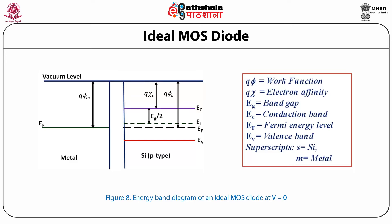This figure shows the energy band diagram of an ideal MOS diode under zero applied bias. Where q*Phi is the work function, q*Chi represents the electron affinity, Eg is the energy band gap, Ec and Ef are the conduction and the Fermi energy bands, and Ev is the valence band. Here the superscript S corresponds to silicon and M corresponds to the metal. When biasing is applied across an ideal MOS diode, there may be three cases: accumulation, depletion, and inversion.